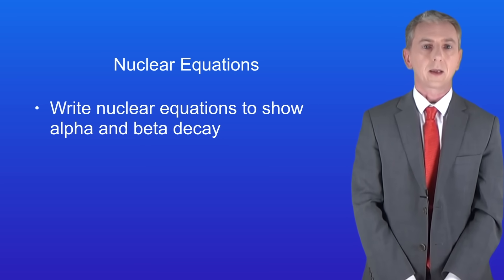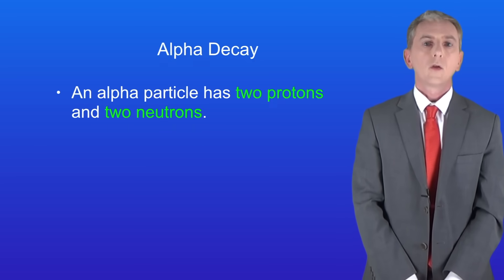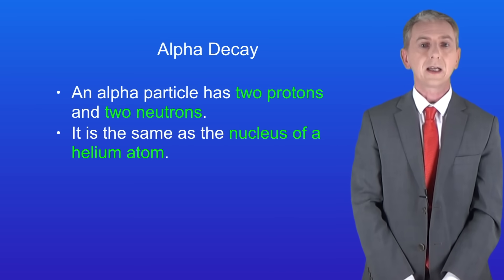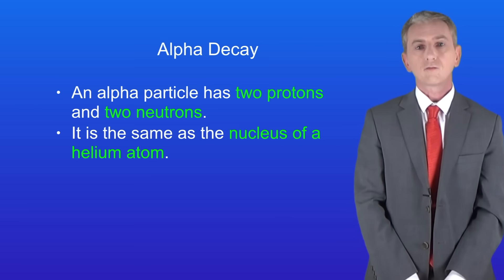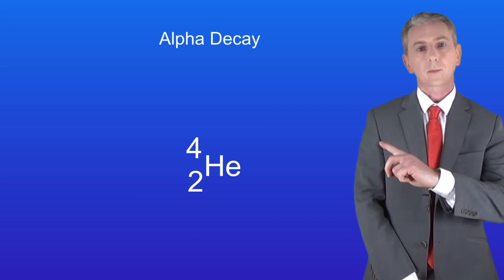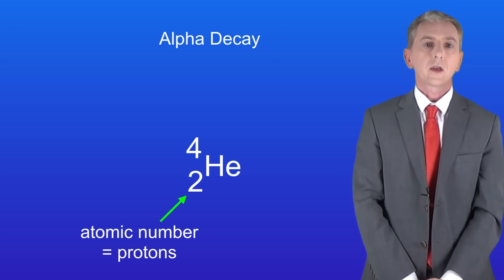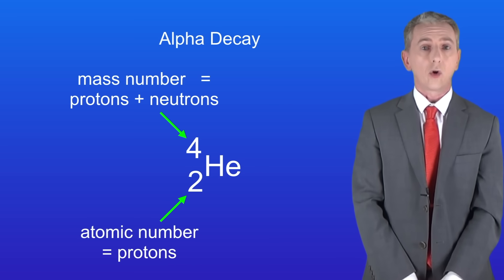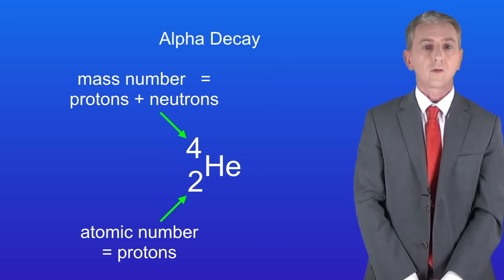Let's start by looking at alpha decay. Remember that an alpha particle has got two protons and two neutrons, so it's the same as a nucleus of a helium atom. Scientists represent an alpha particle by using the symbol for helium. Looking at the atomic number of two, we can see that an alpha particle contains two protons. The mass number of four tells us that the alpha particle has four protons and neutrons added together, so it must have two neutrons.